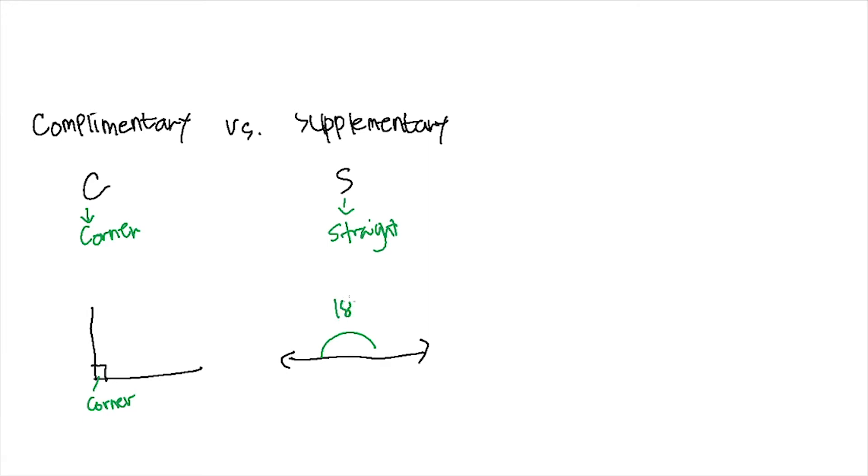Complementary angles are two angles that add up to 90 degrees, which means a right angle. And supplementary angles are two angles that have a sum of 180 degrees, simply means a straight angle.